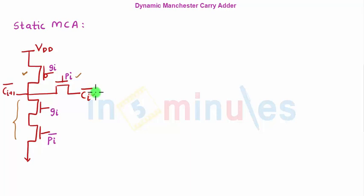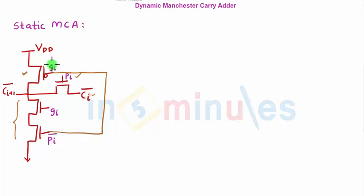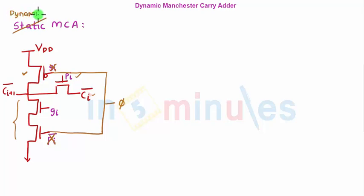We'll use the same circuit as mentioned in the last clip and draw our dynamic Manchester carry adder. The only changes we make: this transistor becomes my header transistor and this transistor becomes my footer transistor. So this no longer carries the GI signal and this no longer carries the PI signal — together they become PHI, and the circuit is now dynamic instead of static.